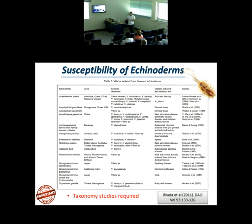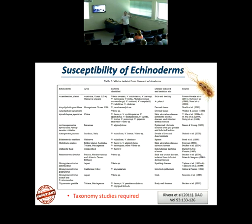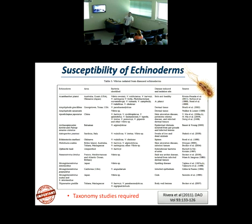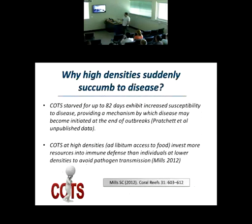If you check the books about Crown of Thorns — Birkeland 1990, Moran 1986, both from 30 years ago — they all say there is a pathogen identified as 'pathogen type A' that induces disease in Crown of Thorns and kills them. But that's it. There are huge knowledge gaps on these things.